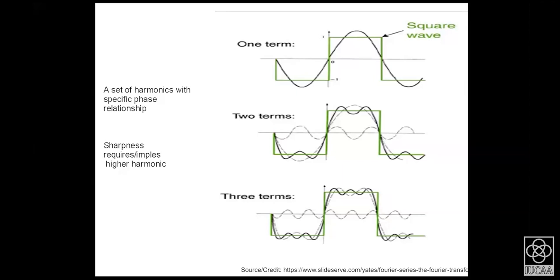One example is a square wave. How it builds up with contributions from different harmonics is shown here: the fundamental alone leaves much to be matched, and a superposition of other harmonics is required. With appropriate amplitudes, the description comes closer and closer to the sharp step. All sharpness implies higher harmonics, and so truncation in the domain from which you derive the Fourier transform leads to spread and ringing in the other domain.